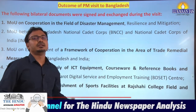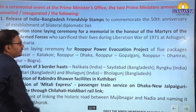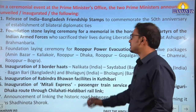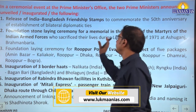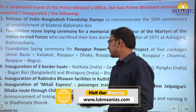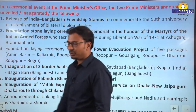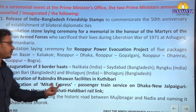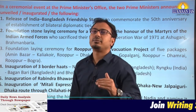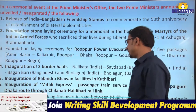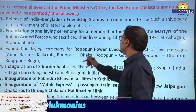Along with these MOUs, various facilities and initiatives were inaugurated by both Prime Ministers — release of India-Bangladesh friendship stamps, inauguration of three border haats, inauguration of Rabindra Bhavan facilities, and the inauguration of Mitali Express, a passenger train between Dhaka and New Jalpaiguri. This is an important development from a connectivity perspective. These are the outcomes of India's PM's visit to Bangladesh.